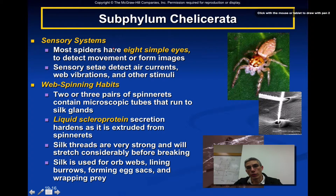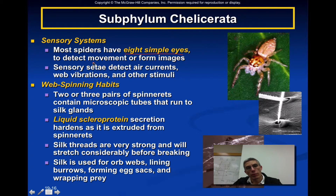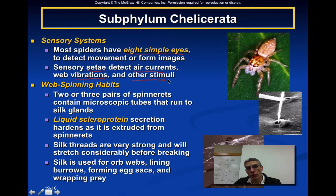The sensory system of this order of arachnids is pretty straightforward. Most spiders have eight very simple eyes, primarily used to detect movement or form simple images. One of the key ways they sense their environment is through their sensory setae — the very tiny bristles used to detect air currents, vibrations, and other physical stimuli.